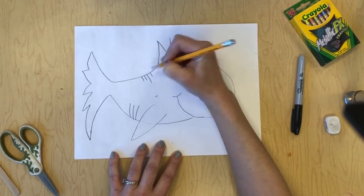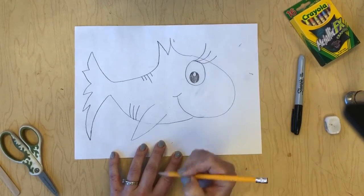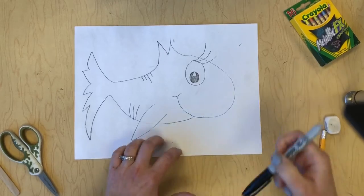And then you can add any designs or patterns, scales, spots, stripes, or some big eyelashes like I'm putting on here. And now we have our fish.